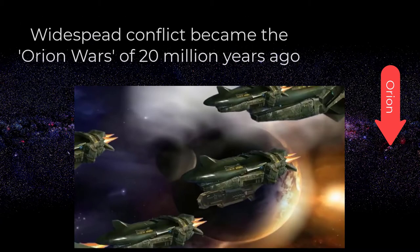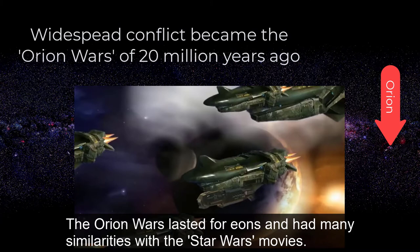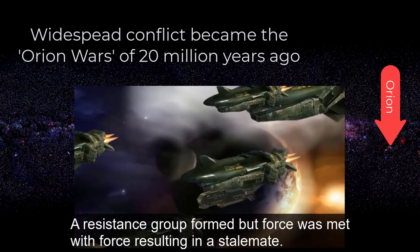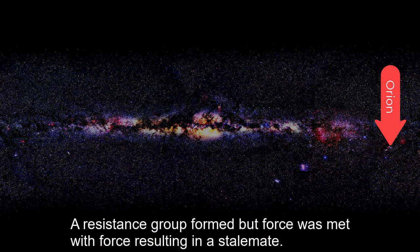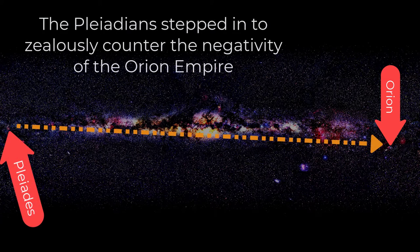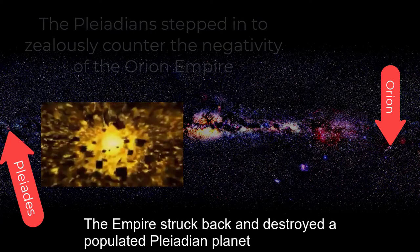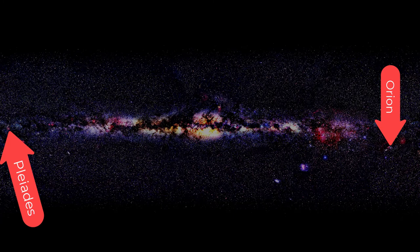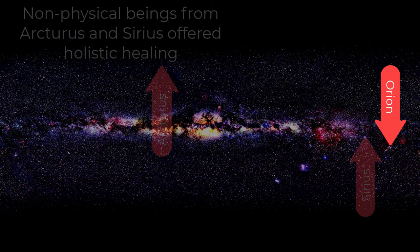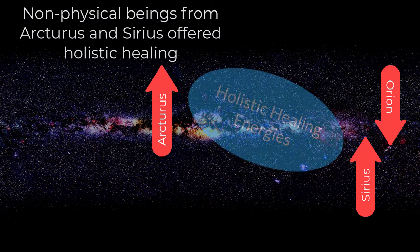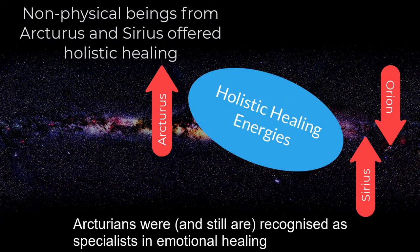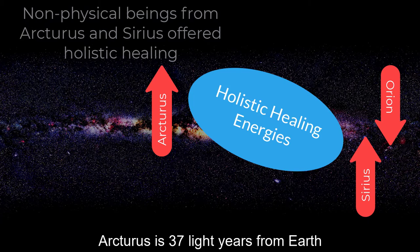Widespread conflict became the Orion Wars of 20 million years ago, lasting for eons with many similarities to the Star Wars movies. A resistance group formed, but force was met with force, resulting in a stalemate. The Pleiadians stepped in to counter the negativity of the Orion Empire, but the empire struck back and destroyed a populated Pleiadian planet. The Pleiadians withdrew. Non-physical beings from Arcturus and Sirius offered holistic healing energies. Arcturians were, and still are, recognised as specialists in emotional healing. Arcturus is 37 light-years from Earth.